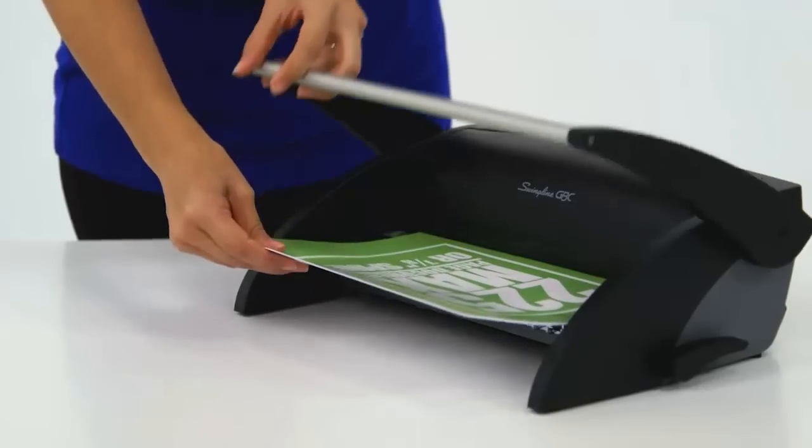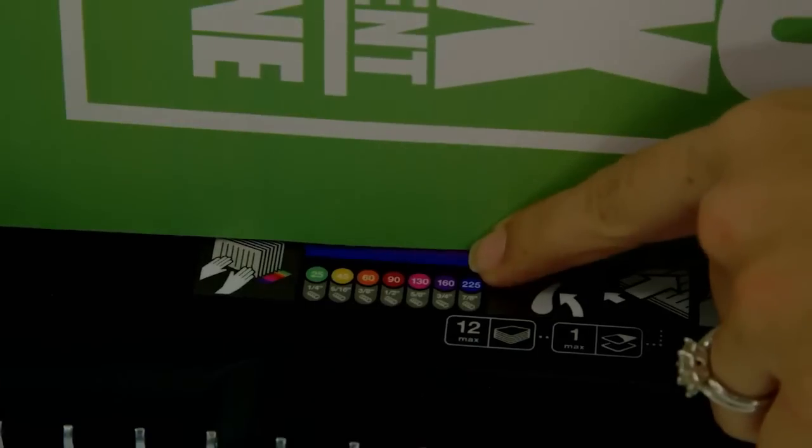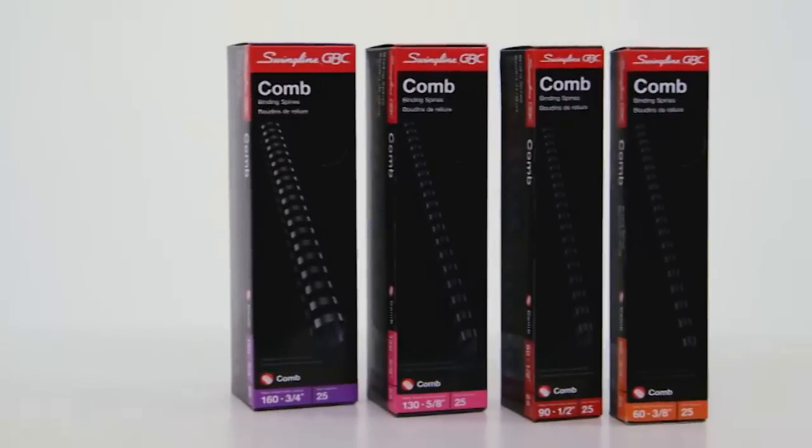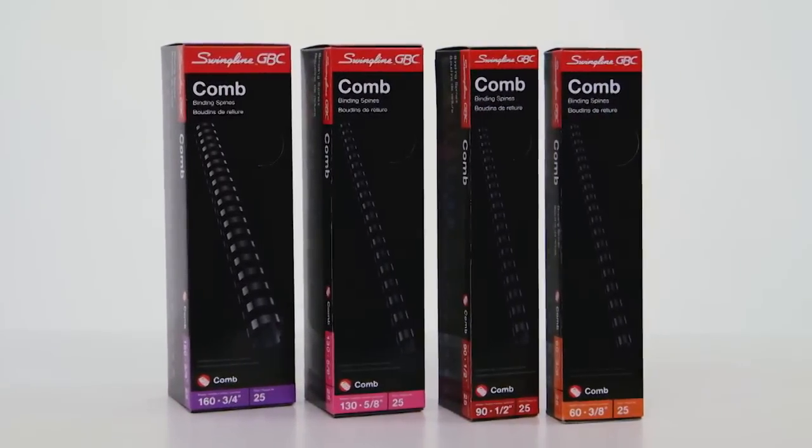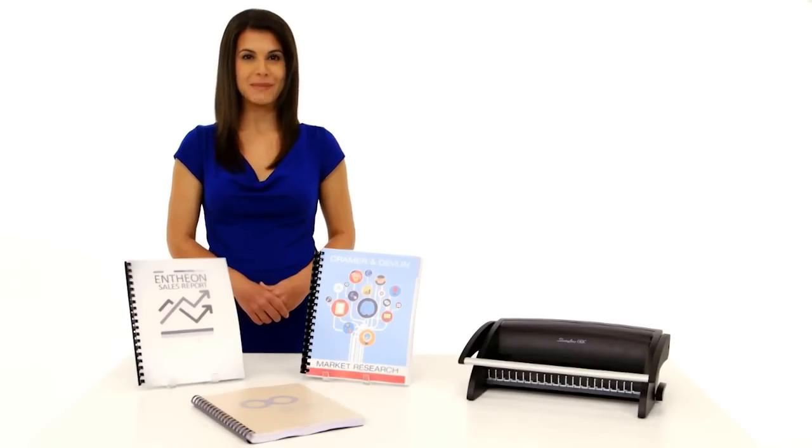Simply punch your document up to 12 sheets at a time using the full-width ergonomic handle. Select the correct comb-bind spine size. Color coding on the C12 corresponds with the color-coordinated packaging of spines. The C12 can bind documents using 1-4 through 7-8ths of an inch comb-bind binding spines.